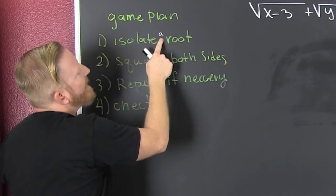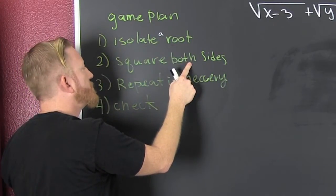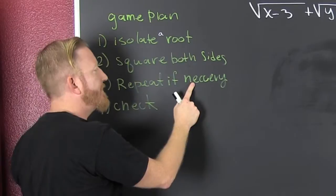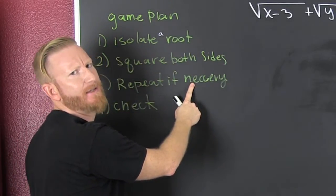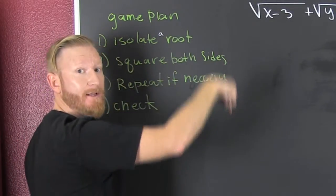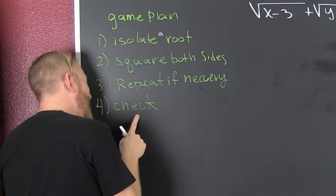Game plan: Isolate a root, square both sides, repeat if necessary - I don't think that's how you spell necessary, comment down below on how to spell it - and then check.